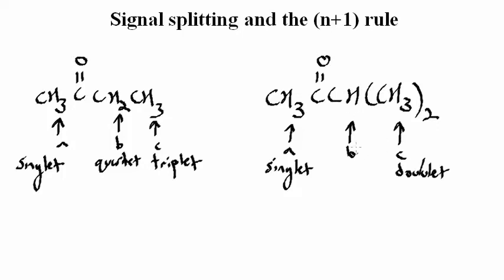And for the B hydrogen here, this has 6 nearby hydrogens, so N is going to be 6, and the peak splitting is going to be a septet, or a splitting pattern of 7.